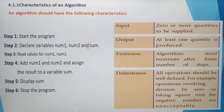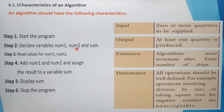The first characteristic is input. Zero or more quantities are to be supplied as input. As an example, for addition of two numbers, this algorithm has two inputs: num1 and num2. For addition of two numbers we need two inputs, so num1 and num2 are given as input. Each algorithm has zero or more quantities to be supplied as input.